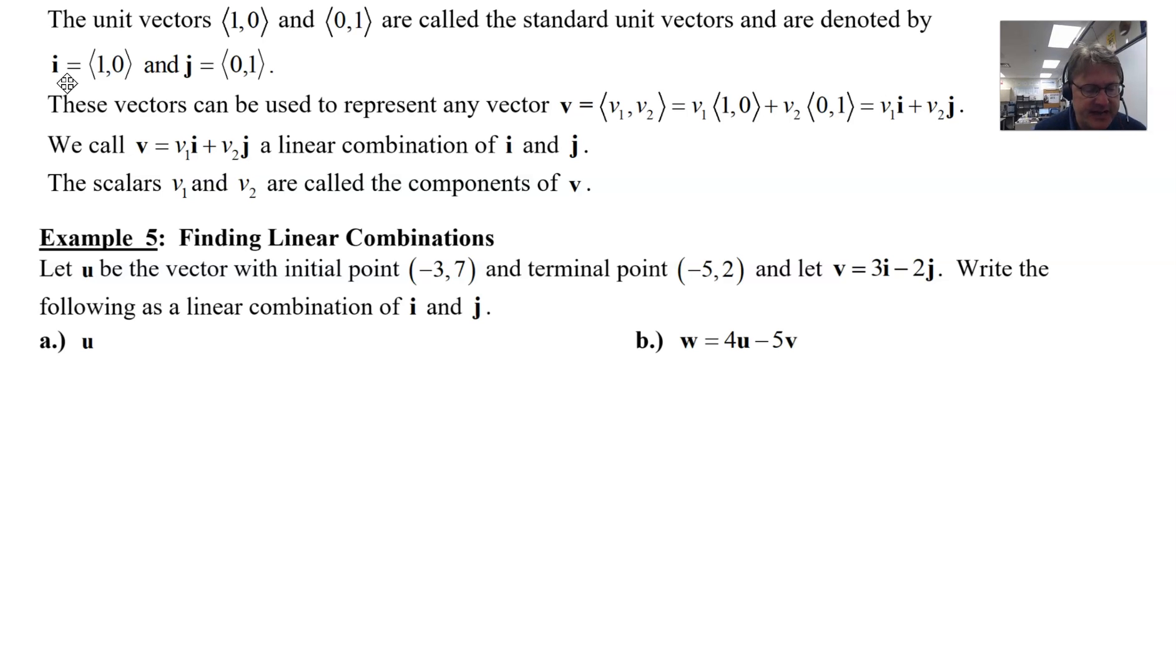These vectors can be used to represent pretty much any vector v. Let's say vector v has the components v₁ and v₂. If we just simply take those components and multiply them each by the unit vectors (1,0), we can then come up with v₁ times the vector i and v₂ times the vector j added together.